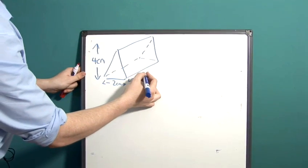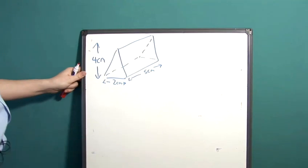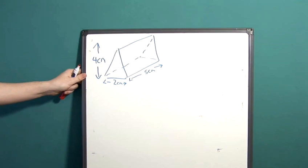Lastly, we have the length of the prism. Let's say that's five centimeters for our example.